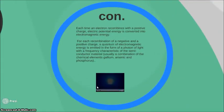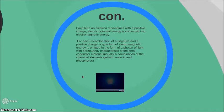Each time an electron recombines with a positive charge, the electron's potential energy is converted into electromagnetic energy. For each combination of a negative and positive charge, a quantum of electromagnetic energy is emitted in the form of a photon of light with a frequency characteristic of the semiconductor material.